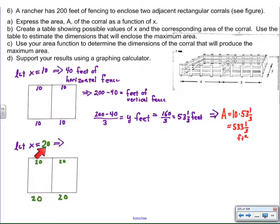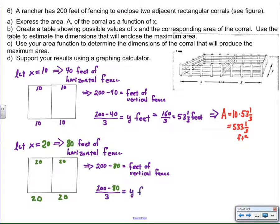But if I use 20 for each pen, then I've used a 1, 2, 3, 4 side length of 20. In other words, I've used up a total of 80 feet of fencing. Then I can figure out that there's 120 feet of fence left over for the y-sides. If I take that 120 and divide it by 2 or 3, then I get 40 feet.